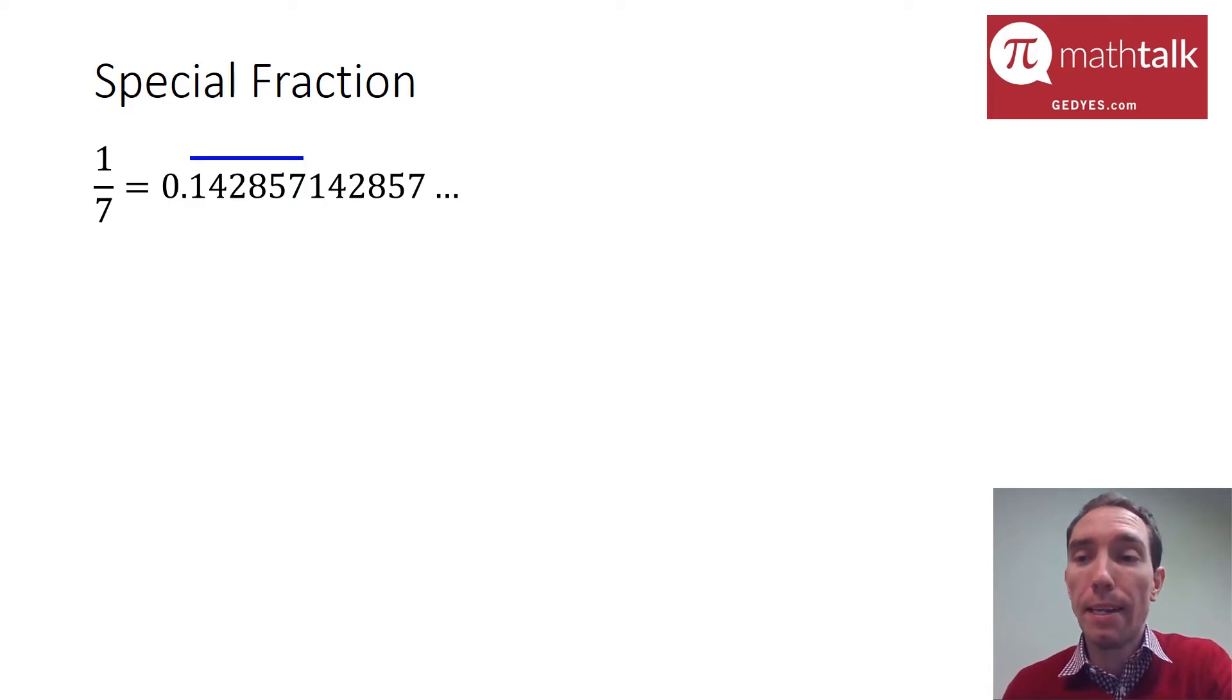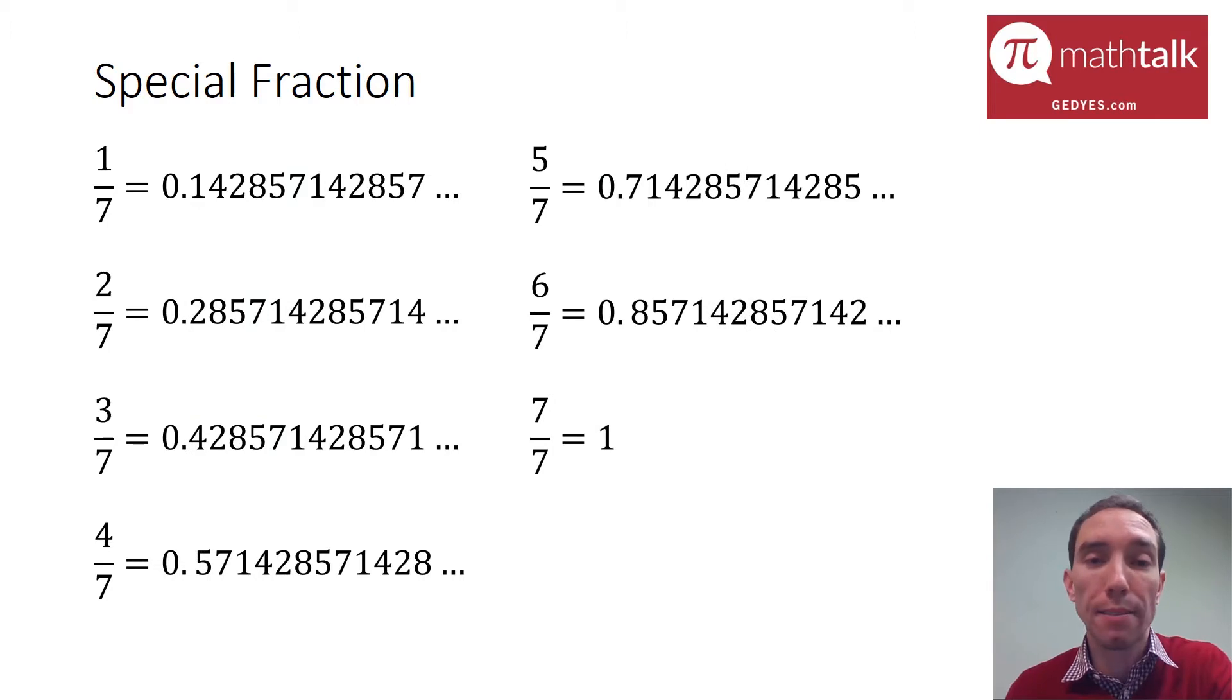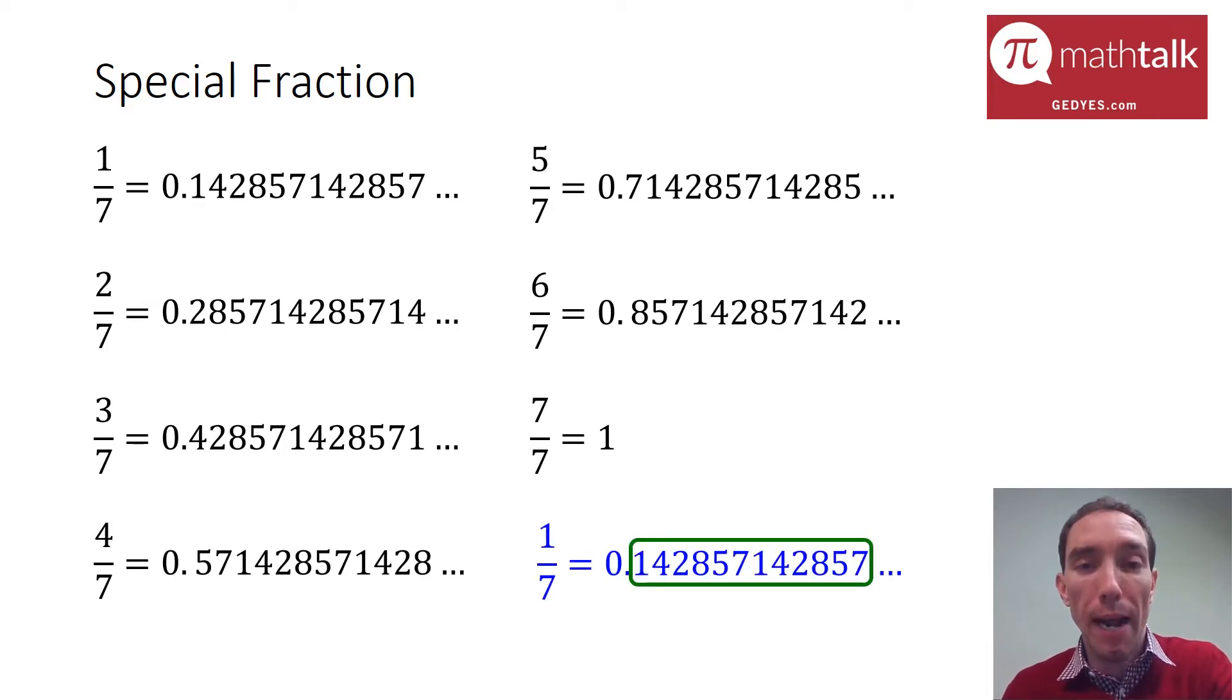That's a really cool feature because it can be applied to all of the other fractions of a seventh. So two-sevenths, three-sevenths, four-sevenths, five-sevenths, six-sevenths all have a crazy decimal, but they're all related to that one specific repeating set of digits: 1, 4, 2, 8, 5, 7.